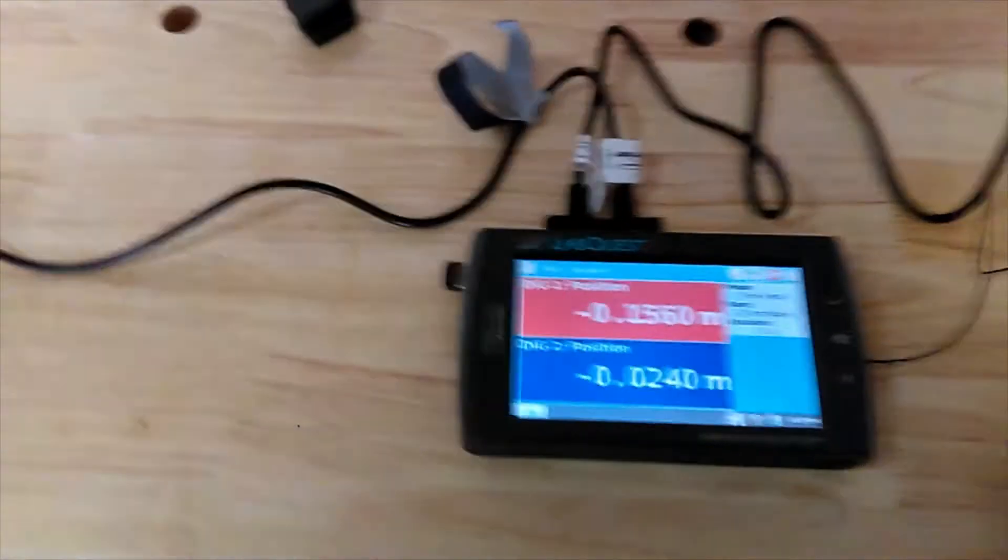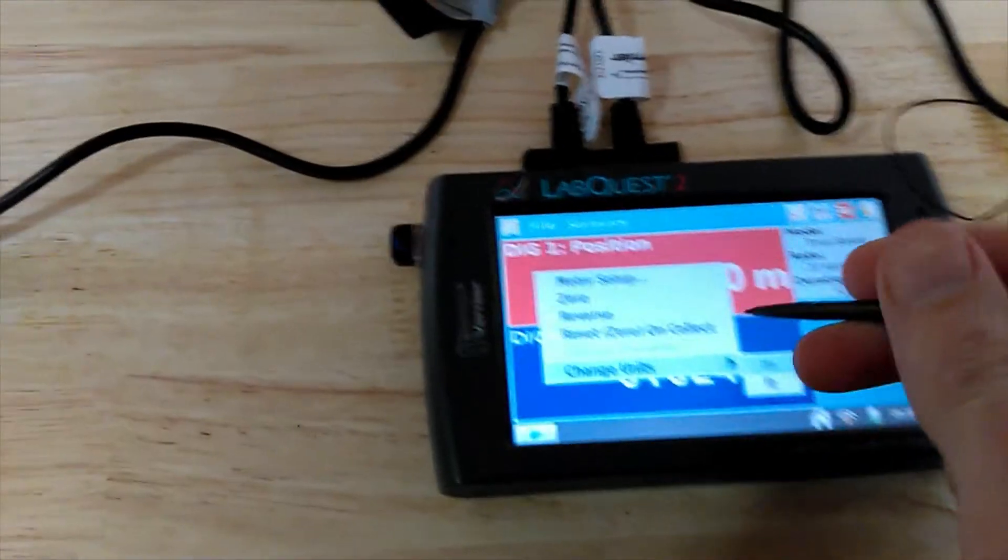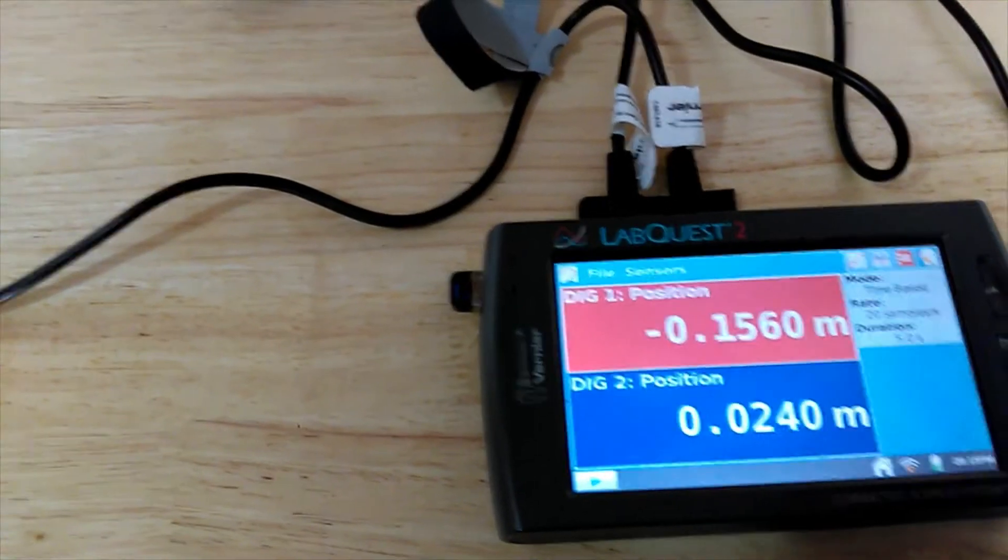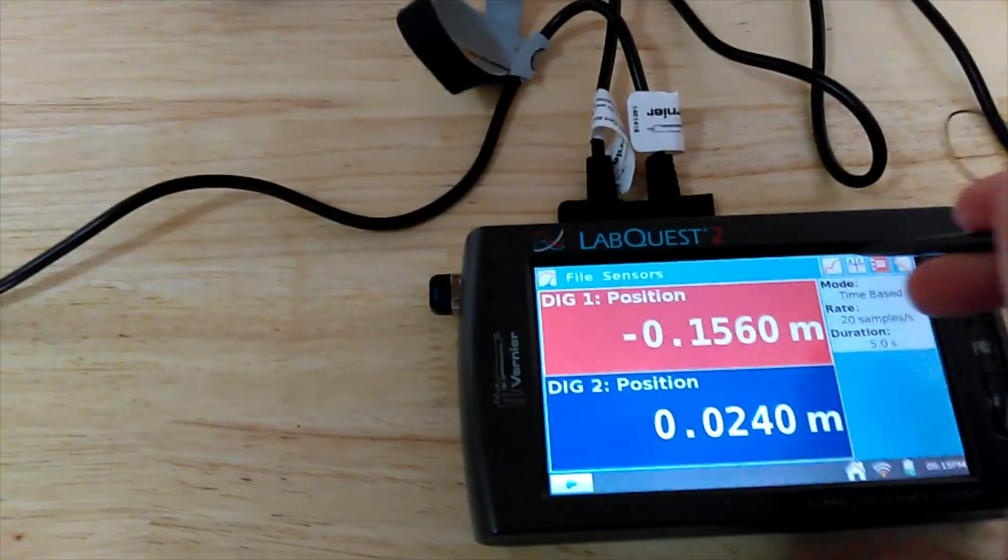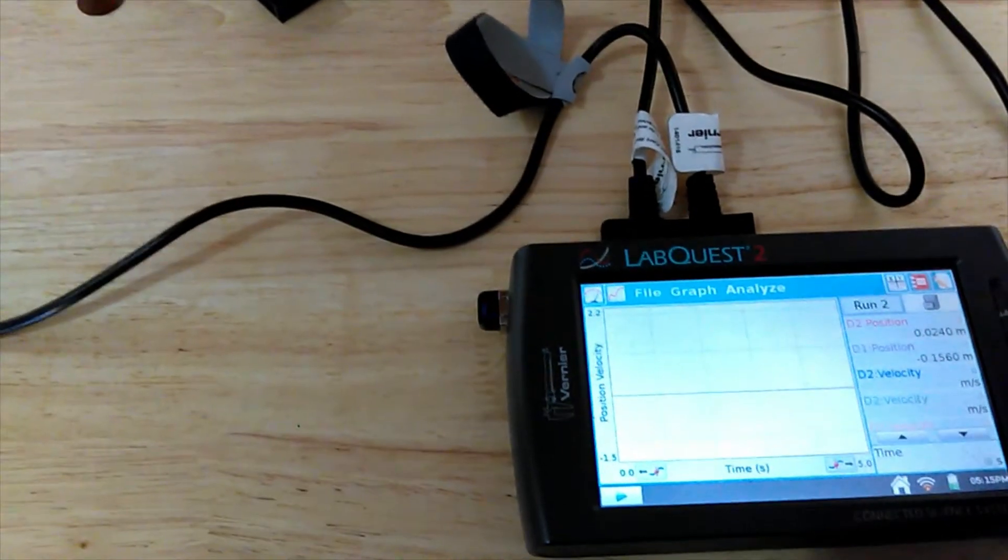One other thing I need to do is reverse one of these motion encoders, so they both think positive is going in the same direction as each other.